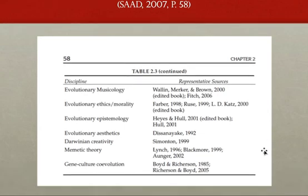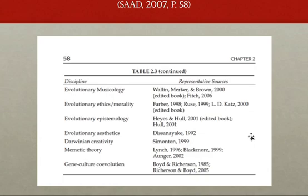A few more fields from the continuation of that table in my 2007 book: Evolutionary musicology asks whether music is an adaptation or an exaptation — does music piggyback on evolved mechanisms that evolved for different purposes, or is there an adaptive function for music itself? Evolutionary ethics and morality — there's a whole field studying morality from a scientific and evolutionary perspective. Evolutionary epistemology is the idea that knowledge itself is selected and retained, and that ideas follow an evolutionary process in terms of how they win out or lose out.